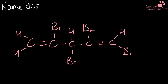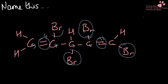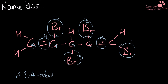Name this. We have one, two, three, four, five carbons. I've got a double bond on one and a double bond on four. And then I have four bromo groups — on carbons one, two, three, and four. So that gives me 1,2,3,4-tetrabromopenta-1,4-diene.